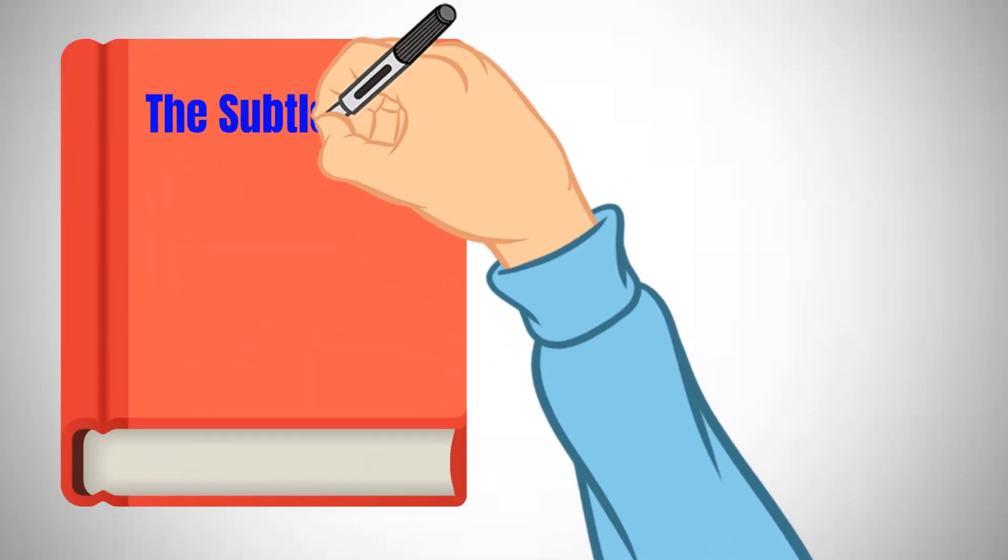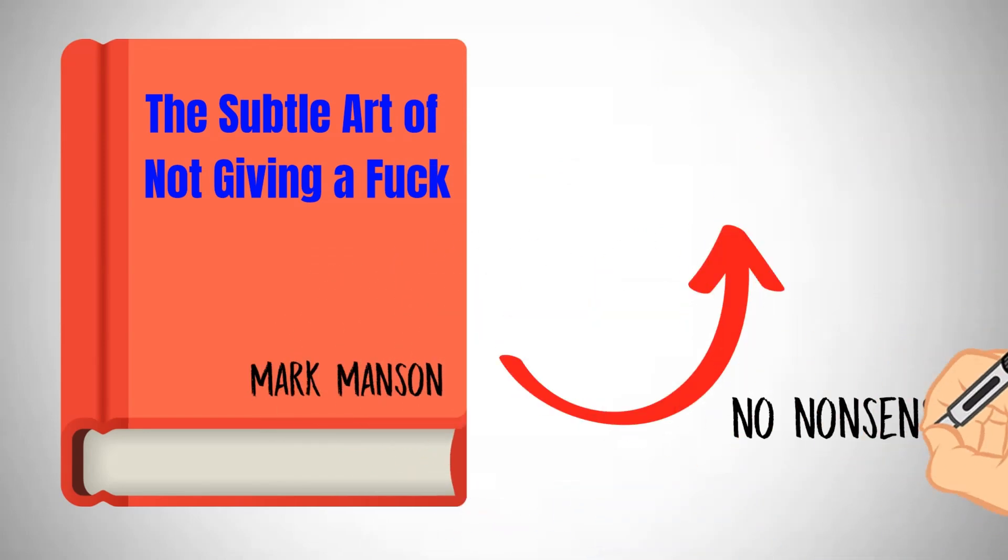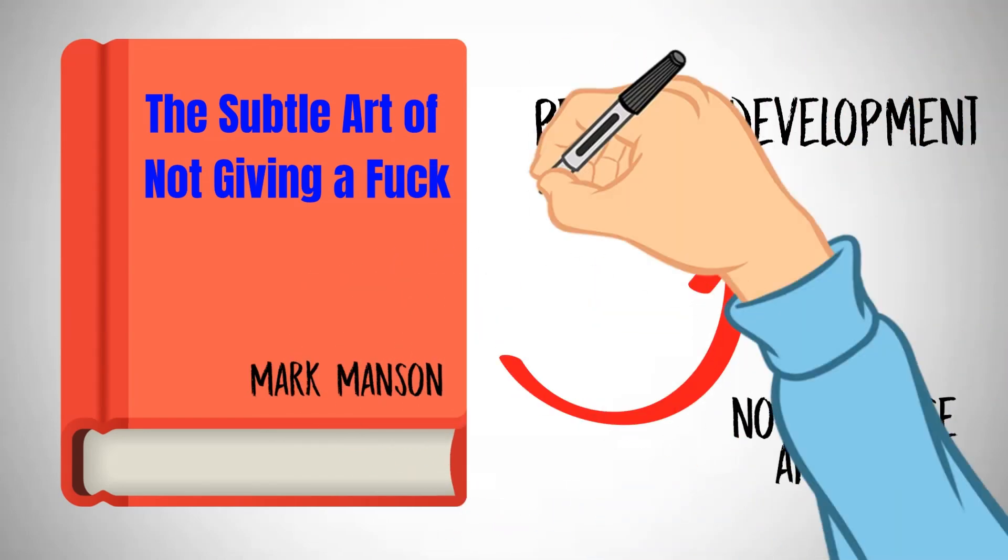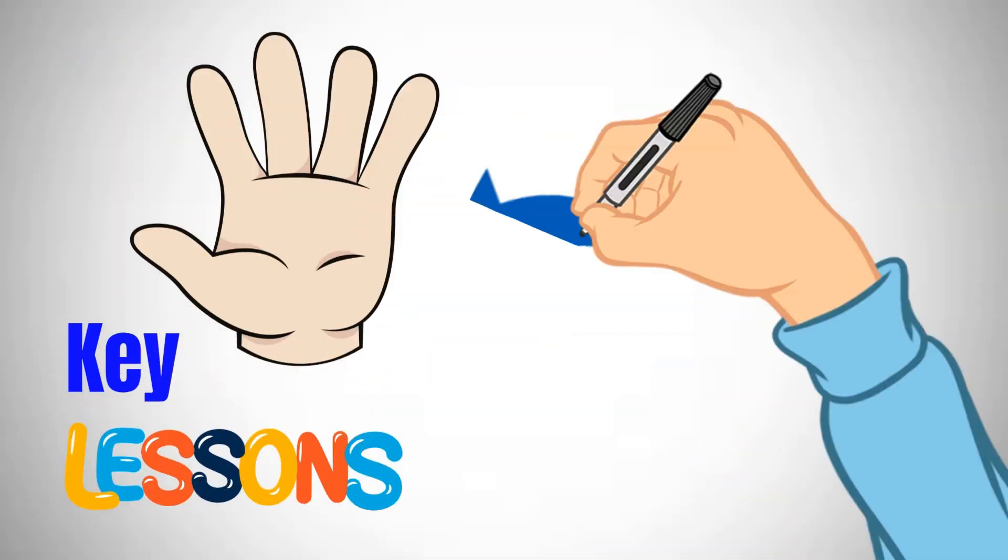The book The Subtle Art of Not Giving a Fuck by Mark Manson offers a no-nonsense approach to personal development and self-improvement. Here are five key lessons you can draw from the book.